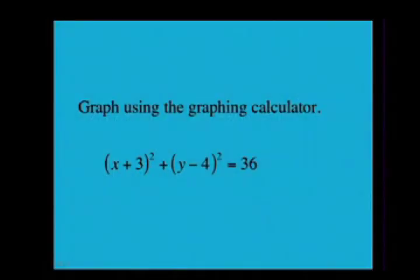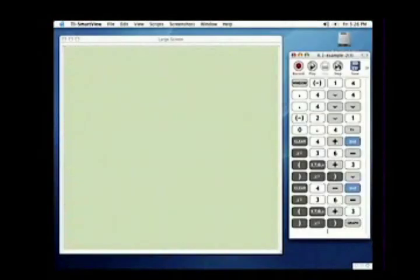Let's do another example. And the example is the same exact problem, but this time we're going to graph it using the graphing calculator. So we're going to take (x + 3)² + (y - 4)² = 36. So let's go to the graphing calculator and take a look at what it would be like trying to graph this using the graphing calculator.